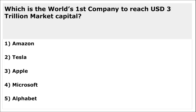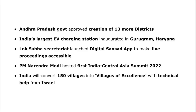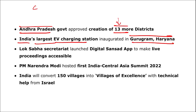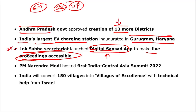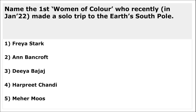Apple became the world's first company to reach a 3 trillion dollar market cap. Andhra Pradesh government approved the creation of 13 more districts. India's largest ever charging station is in Gurugram, Haryana. Uttar Pradesh achieved the maximum number of electric vehicle sales. The Lok Sabha Secretariat launched the 'Digital Sansad' app for live proceedings. PM Modi hosted the first ever Central Asia Summit of 2022.